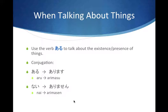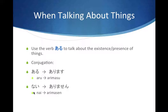For the negative form, you can go from Arimasu to the negative directly: Arimasu becomes Arimasen. Instead of Arimasu, you say Arimasen to make it negative. The dictionary form of the negative is Nai, just so you know. So: Aru / Nai, Arimasu / Arimasen.